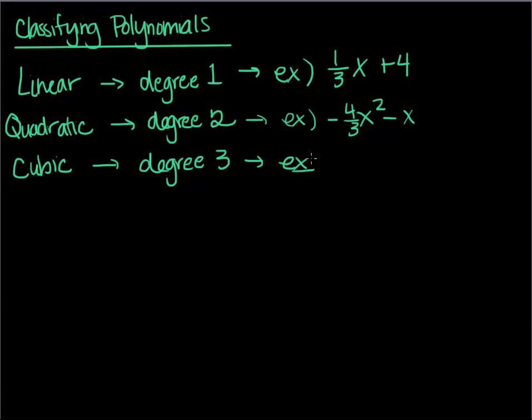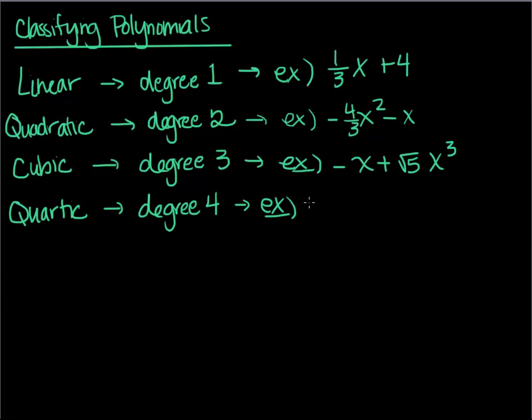Degree three, we call it cubic. An example of a cubic maybe is, I don't know, negative x plus square root of five x cubed. I wanted to do that because I want to point out that your coefficients just have to be real. They don't have to be rational. They can be irrational, but they do have to be real. And then the last one. So linear, quadratic, cubic, and then a degree four. This is the last one we do. It's called a quartic. And that's any degree four polynomial. So for example, 3x to the fourth, let's say, minus 3x cubed plus 7x squared minus pi. That's a constant, right?